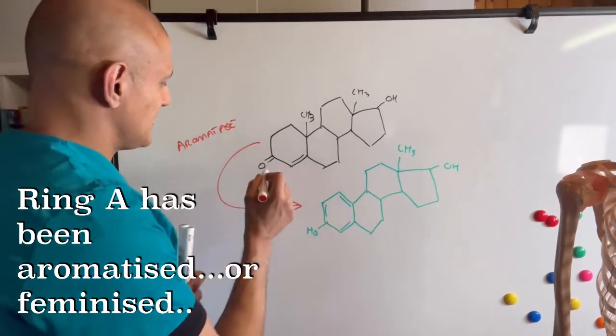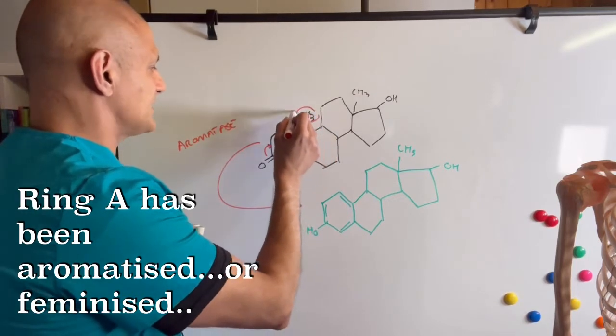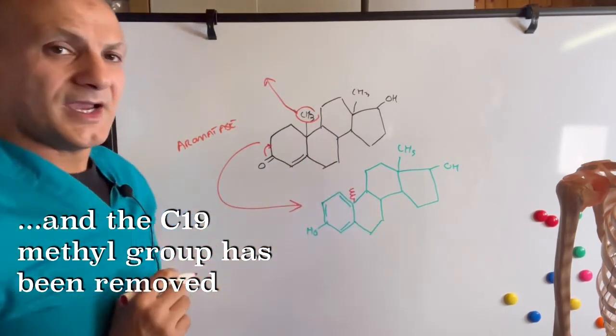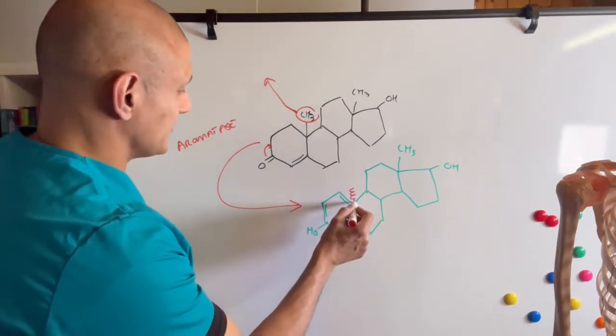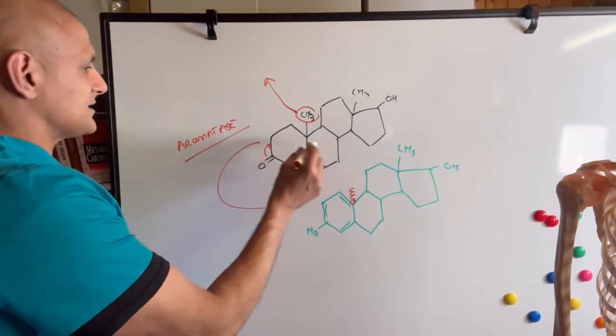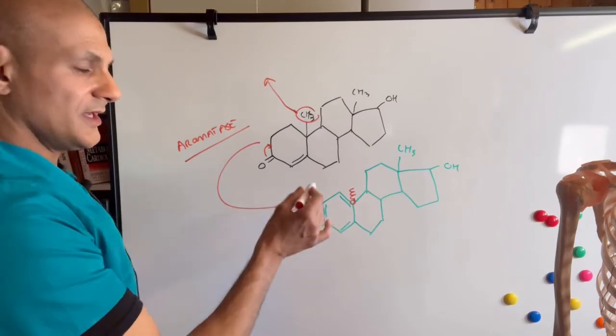That we've lost this double bond, it jumps in here, and this has disappeared. So we don't get any methyl group attached here. Testosterone can get converted to estrogen, estradiol, in the fat tissues.